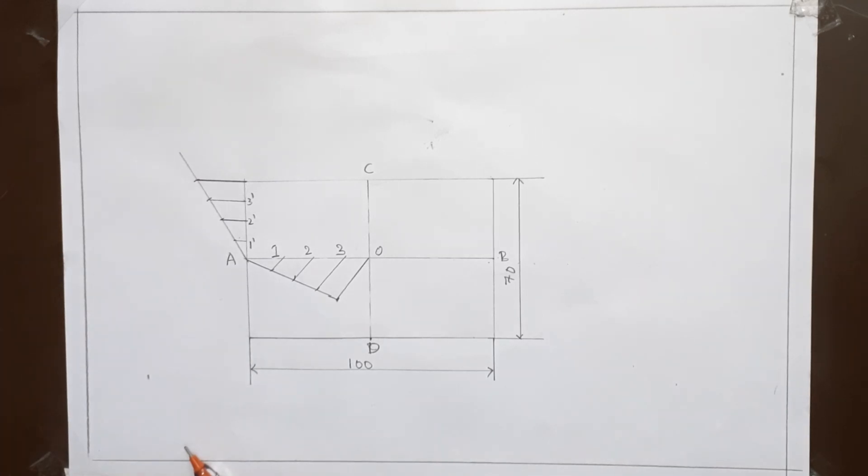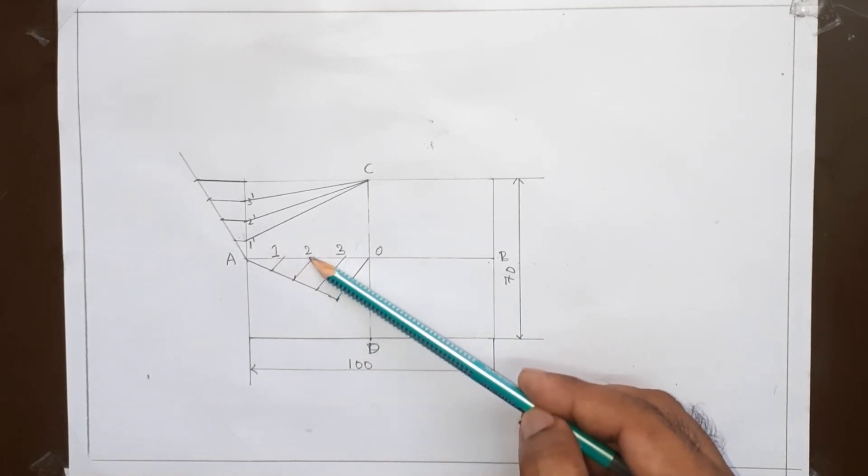Now from point C, join 1, 2 and 3. Now again from point D, join to the points of 1, 2 and 3.